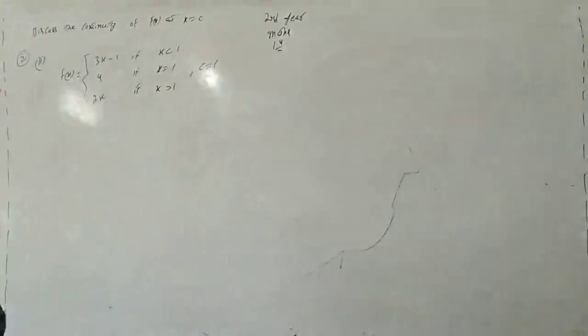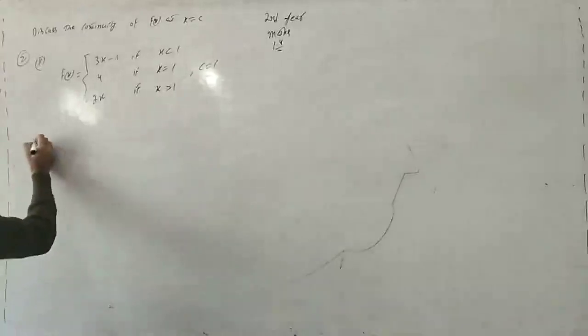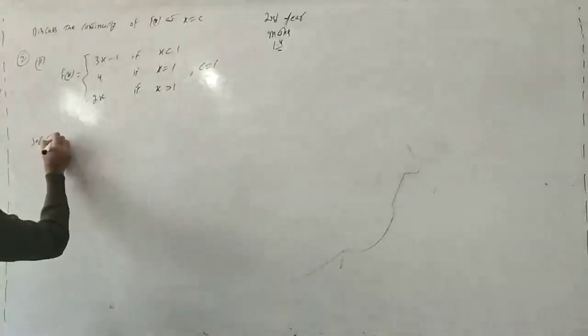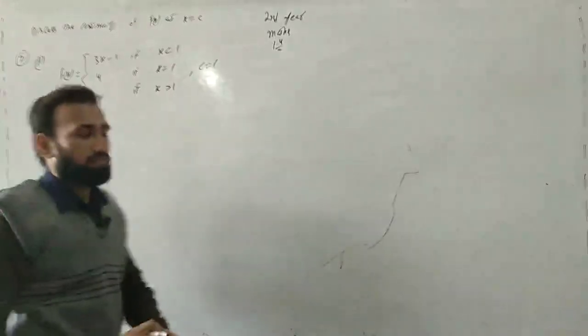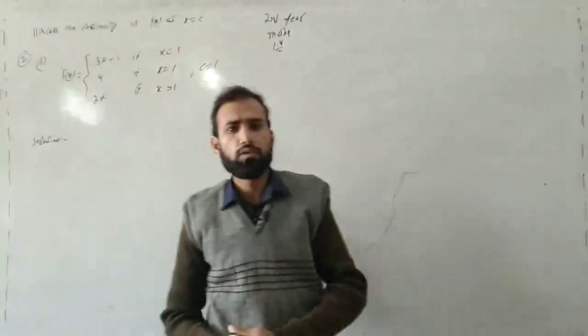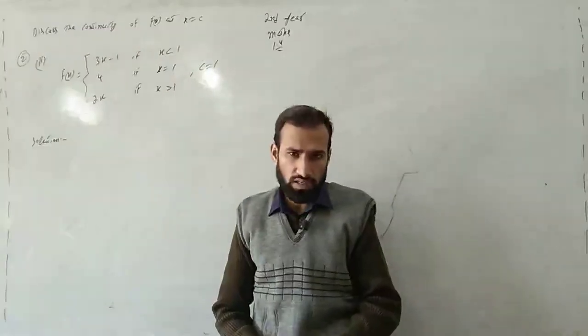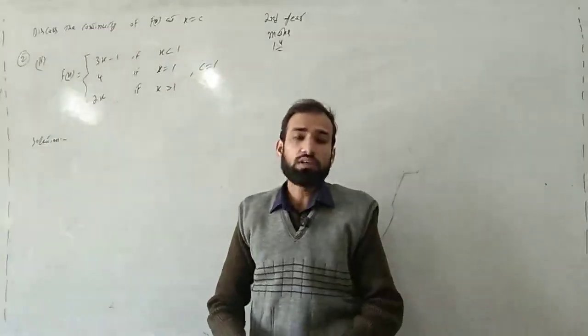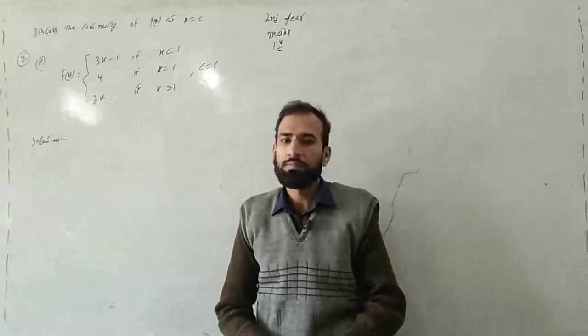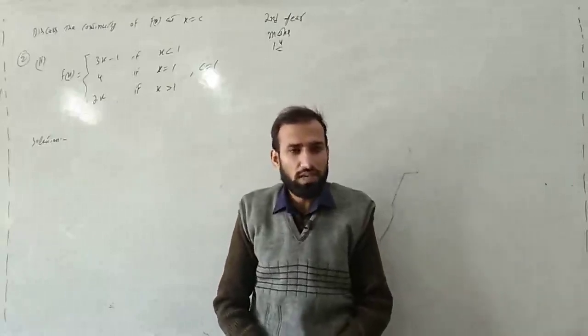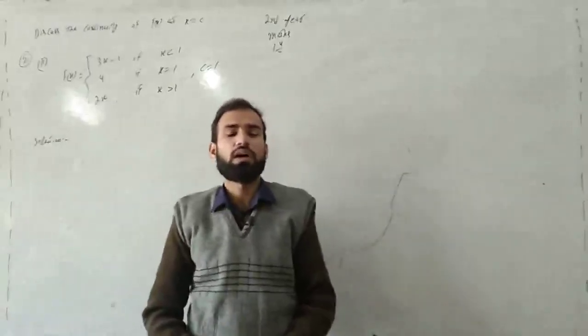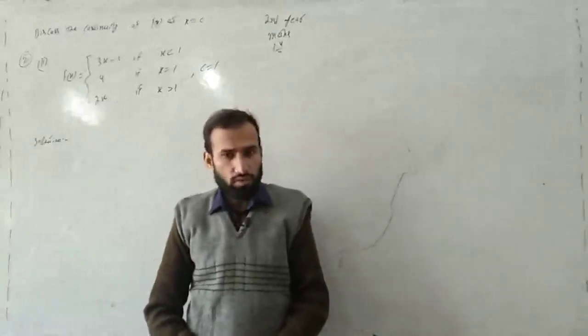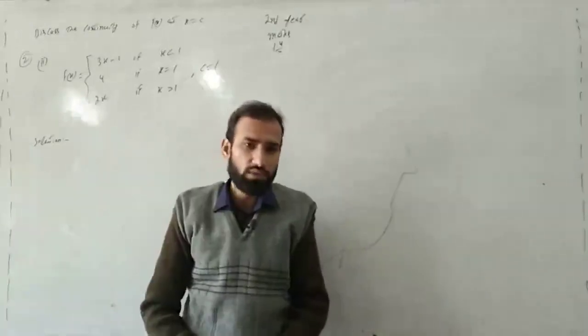Humne is function ki continuity check karni hai — aaya ke function continuous hai ya nahi? Solution: Function ke continuous hone se kya murad hota? Agar ek function continuous hai to uska matlab hai ke following conditions satisfy honi chahiye. Agar wo conditions satisfy ho jayengi, tab function continuous hai, otherwise continuous nahi hoga.